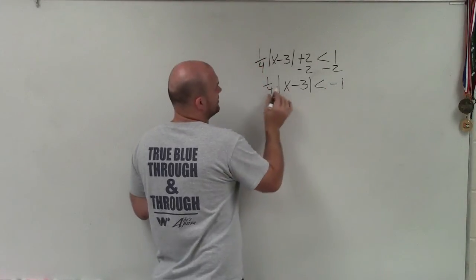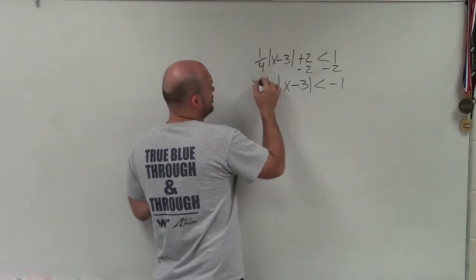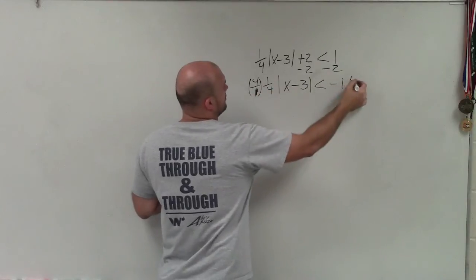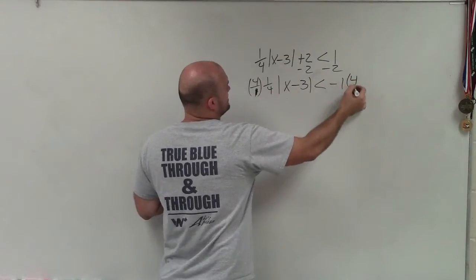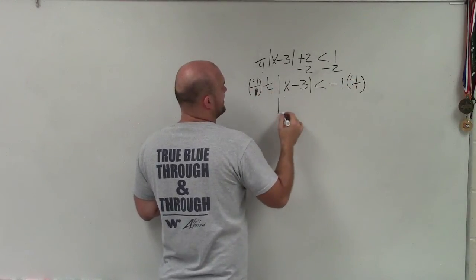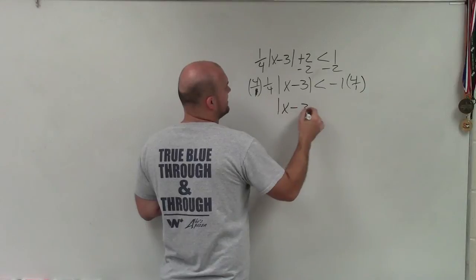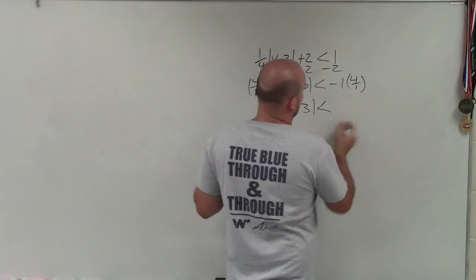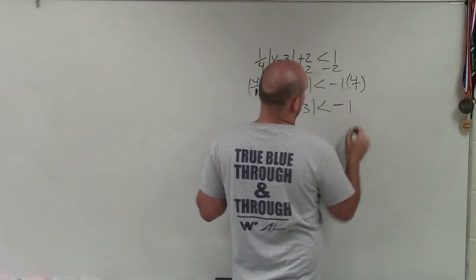Then to get rid of the 1/4, I'll multiply by the reciprocal on both sides. So therefore, I have the absolute value of x minus 3 is less than negative 1.